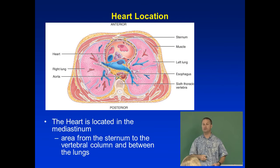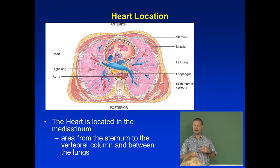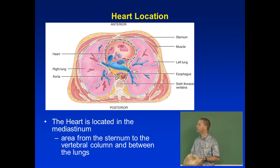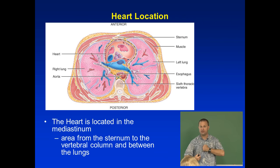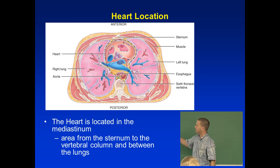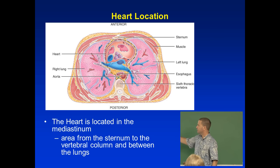The heart is located in an area called the mediastinum — or 'mediastinum' if you're British. This is just the area in the chest, the ventral wall of the chest. It's surrounded by the lungs, so the mediastinal cavity is surrounded by the pleural cavity.